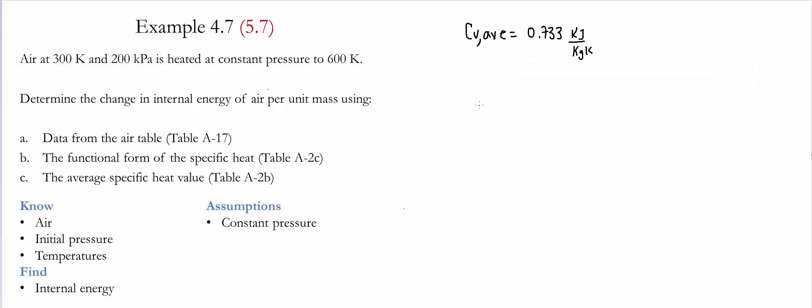Using the value found in table A2B, we find that the change of internal energy is equal to Cv at the average temperature times the difference between the two temperatures, T2 minus T1. If we substitute the values, we find that delta U equals 220.0 kilojoules per kilogram.